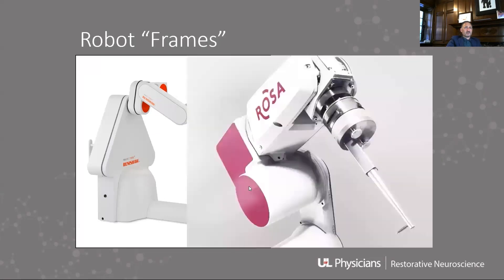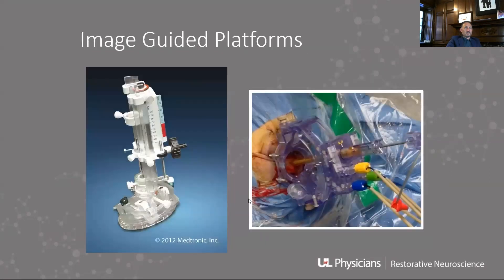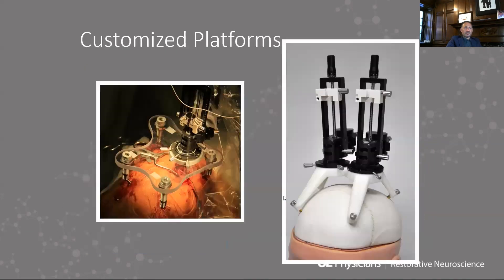Here are traditional frames — we showed some of these pictures earlier. Robotic frames include the ROSA system and image-guided platforms. Then there are customized platforms, which are what I use primarily — both versions made by FHC — to perform more rapid and more comfortable stereotaxis, because the patient can move with that frame on the head.